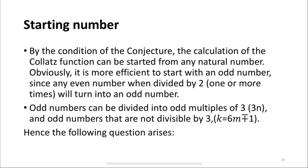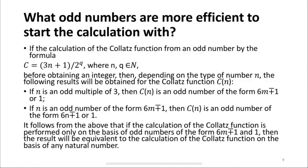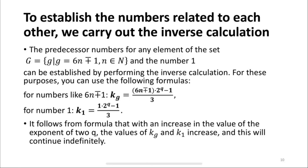Hence the following question arises: what odd numbers are more efficient to start the calculation with? It follows from the above that if the calculation of the Collatz function is performed only on the basis of odd numbers of the form 6m ± 1 and 1, then the result will be equivalent to the calculation of the Collatz function on the basis of any natural number. To establish the numbers related to each other, we carry out the inverse calculation. With an increase in the value of the exponent 2^q, the values of kg and k1 increase, and this will continue indefinitely.